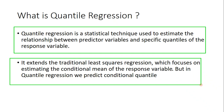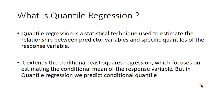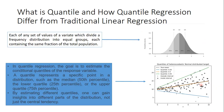Quantile regression extends the traditional least squares regression, which focuses on estimating the conditional mean of the response variable. In quantile regression, we instead predict the conditional quantile. So in traditional regression we predict the mean, but in quantile regression we predict the quantile of the response variable.